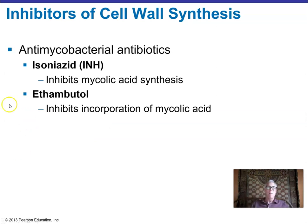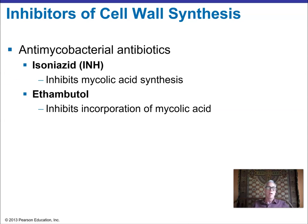Isoniazid and ethambutol are used against mycobacteria and are usually used in combination. When treating tuberculosis, two different antibiotics are generally used together. It's a very slow-growing bacterium requiring a six-month antibiotic course, and using multiple drugs helps prevent resistance from occurring during that long treatment period.